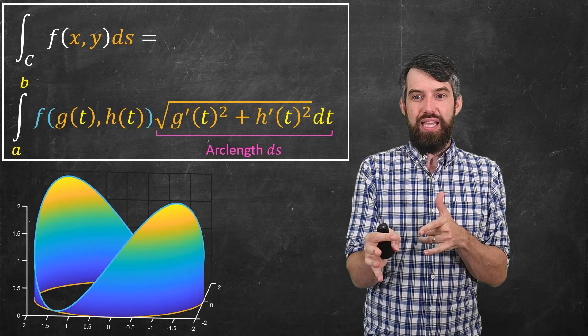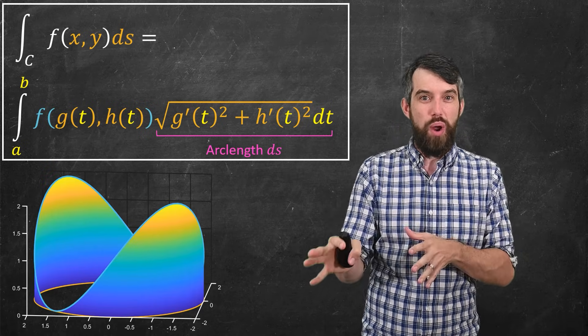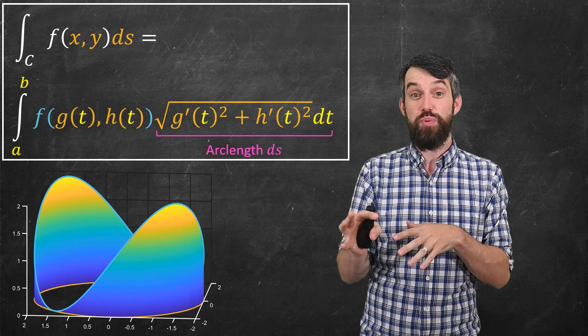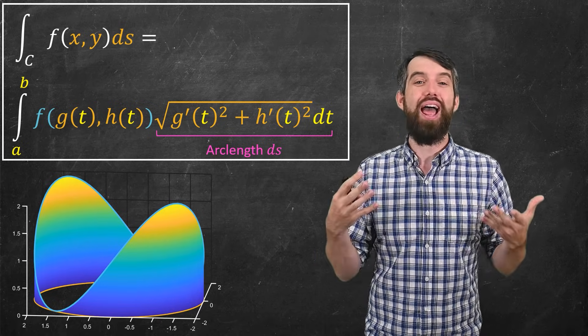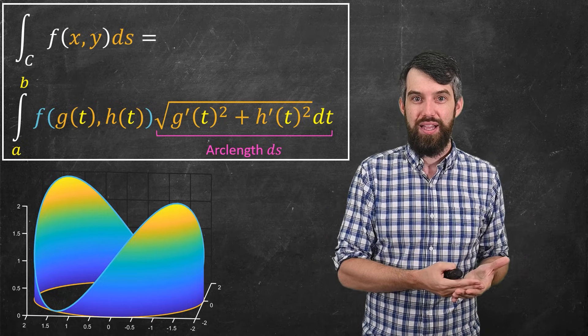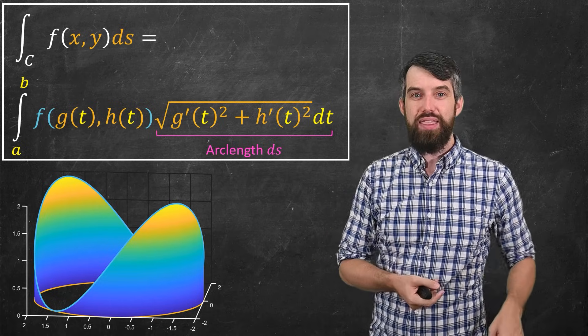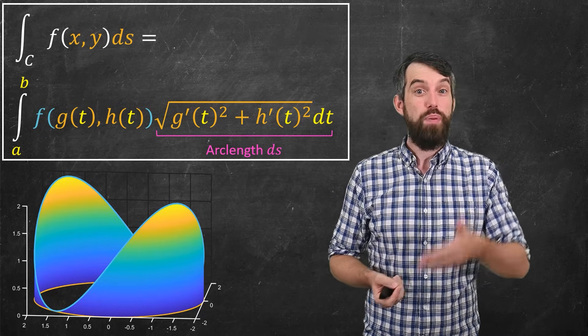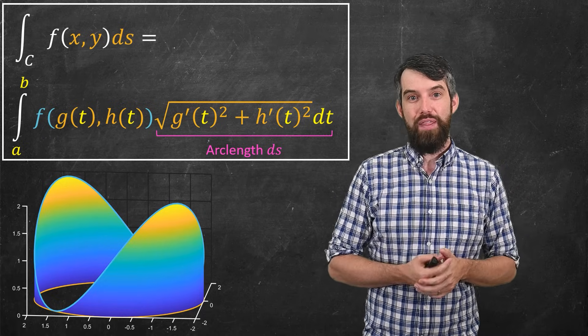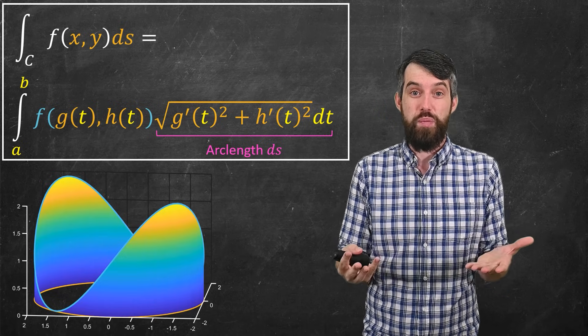The way I think about this is all of that business with the square root, the square root of g' squared plus h' squared dt, all of that is just the expanded form of just the little arc length, the little ds. And so when I look at my picture, I think that I am trying to add up a whole bunch of little components. My components have the height, the f, and they have the width, the little ds. And that's what I think of this formula.